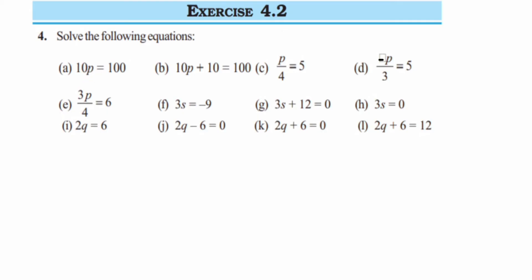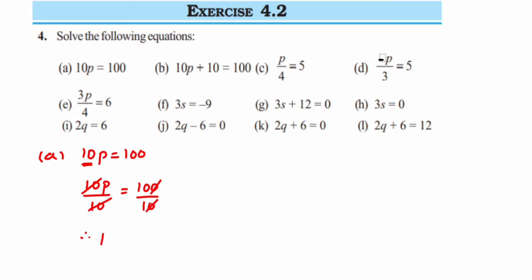Let's start with the first one: 10p = 100. Here, 10 is in multiplication with p. To remove the 10 from the left-hand side, we divide 10 on both sides: 10p/10 = 100/10. Remember, whatever you do on the left side, you do the same on the right side. The 10s cancel, leaving p free, and the zeros cancel too. So p = 10. That's the first answer.